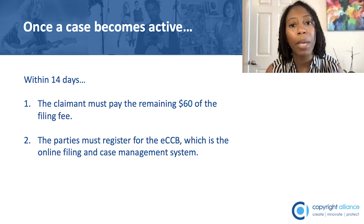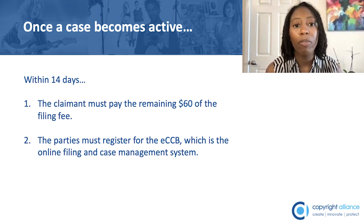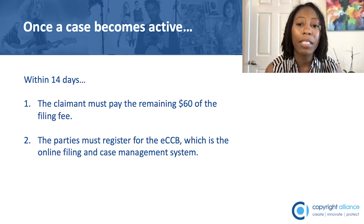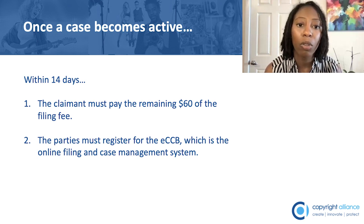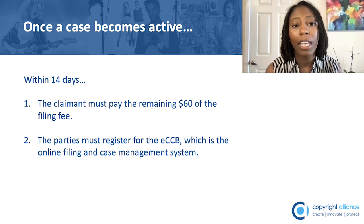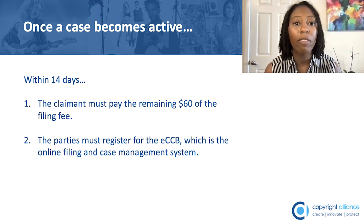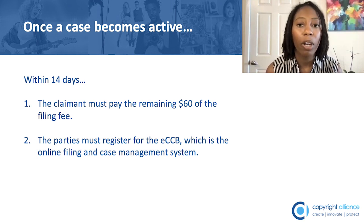After the opt-out period expires and the case becomes active, what happens after that? Once the case becomes active, the board will issue an order to all the parties requiring two things. Number one, the claimant must pay the remaining $60 of the filing fee. The claimant pays the first part of the filing fee when they file their claim — that portion is $40 — and once the case becomes active, they then pay the remaining $60. Number two, the order will require all of the parties to register for the eCCB, which is the online filing and case management system. This is where the parties will file their materials related to the case and receive any communications from the CCB.